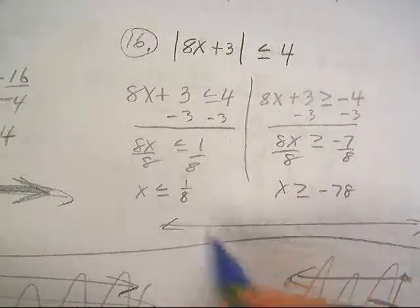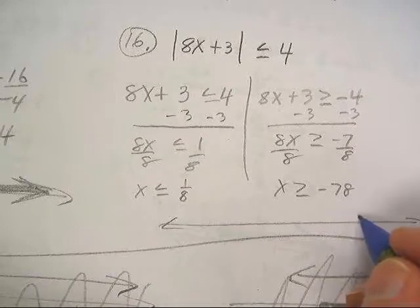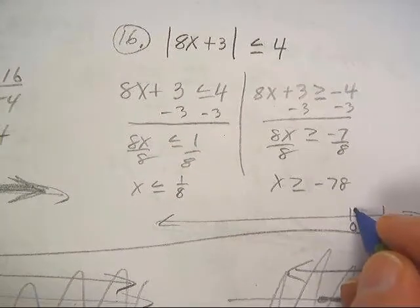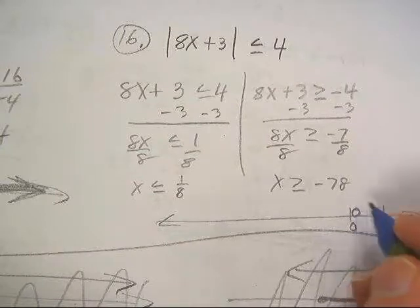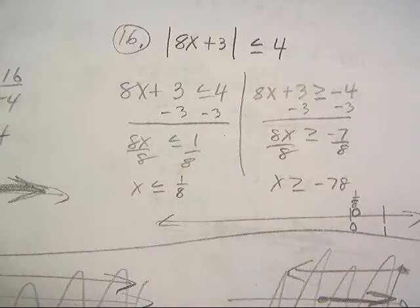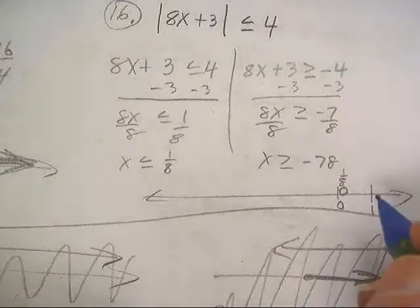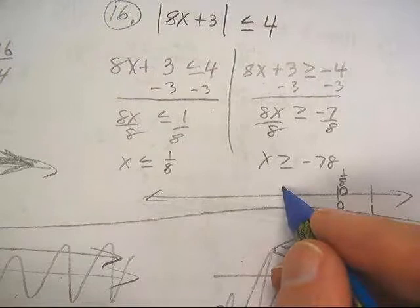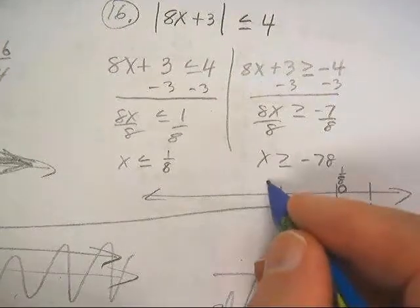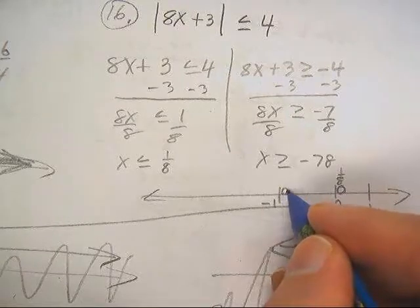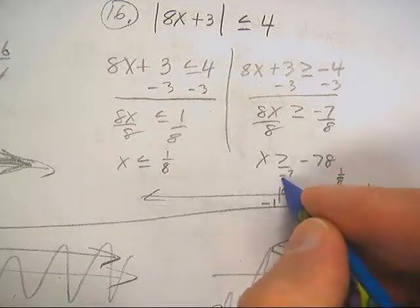So if this is 0 down here, and that's 1, one eighth would be right in here. Let me label that as one eighth. And then I've got negative 1 over here. There's negative 1. And negative seven eighths is going to be pretty close to it.